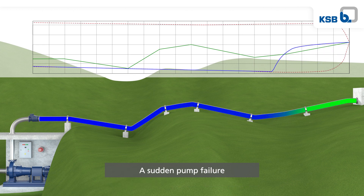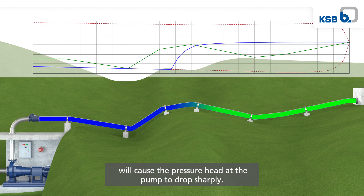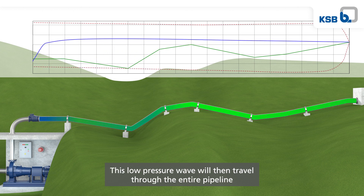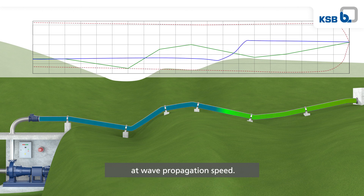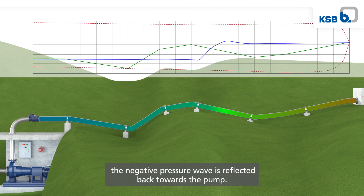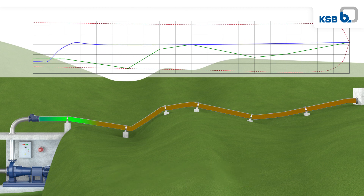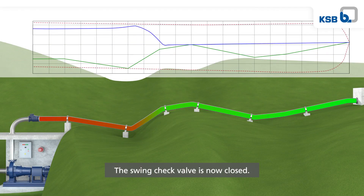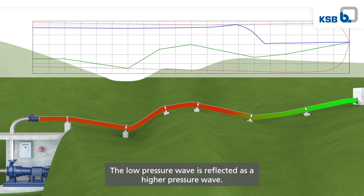A sudden pump failure will cause the pressure head of the pump to drop sharply. This low pressure wave will then travel through the entire pipeline at wave propagation speed. At the free outlet into the reservoir, the negative pressure wave is reflected back towards the pump. The swing check valve is now closed, and the low pressure wave is reflected as a higher pressure wave.